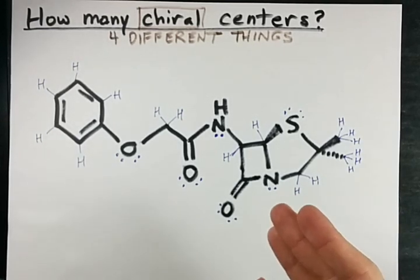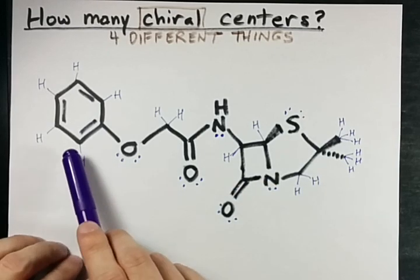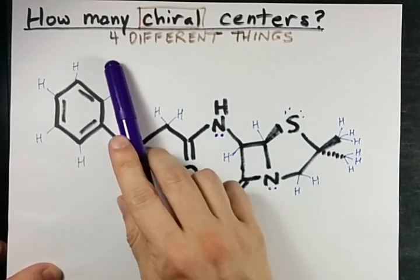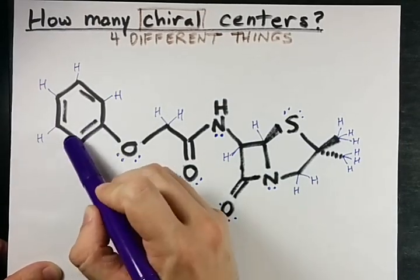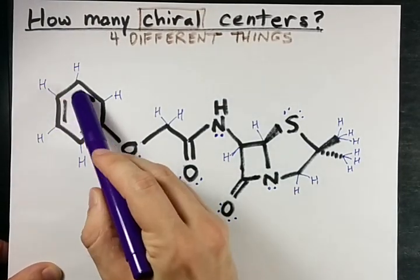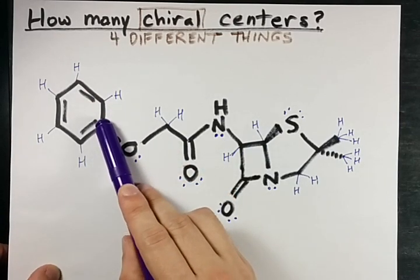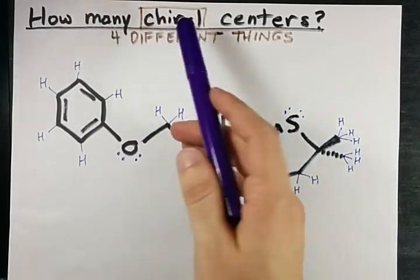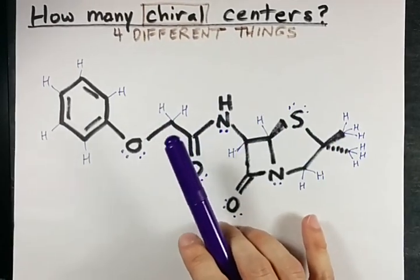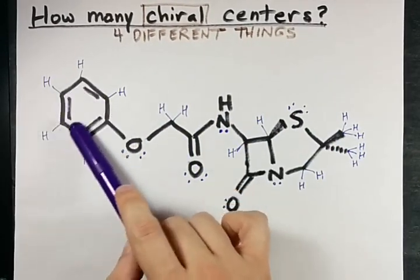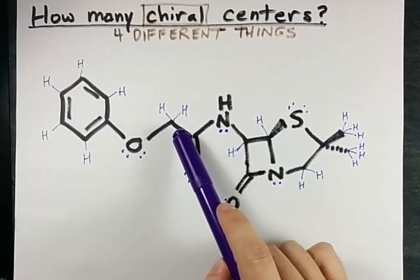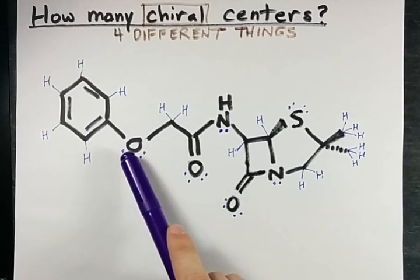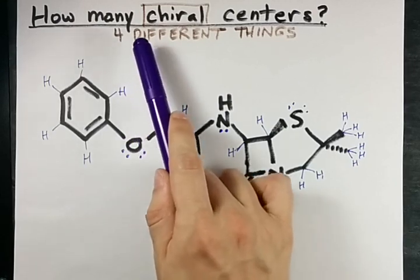This carbon is attached to this carbon, this carbon twice, and this hydrogen — that's not four different things, it's only attached to three things. The same is true for all the carbons around the benzene ring. Another way to put it: if there's a double bond, it can't be a chiral center because it needs four different things. This oxygen is connected to two different groups, but it has two lone pairs that are the same, so it's not four different things.